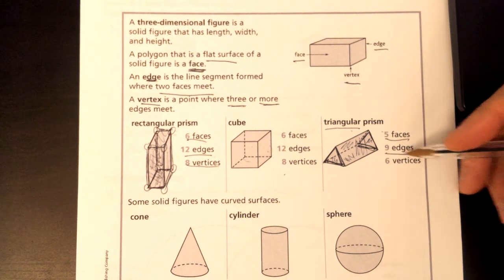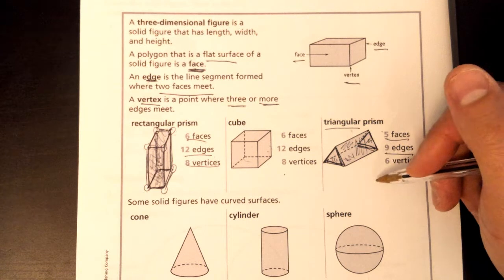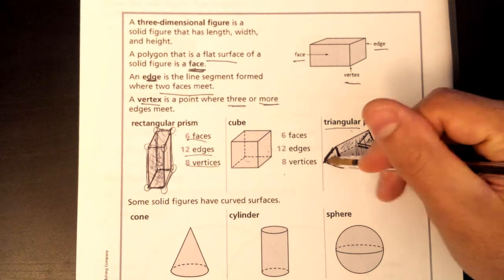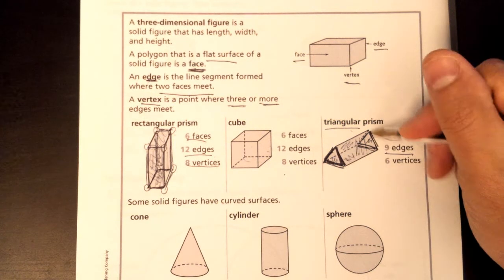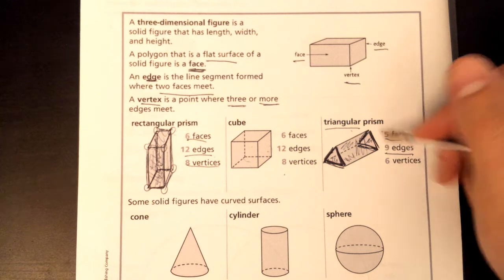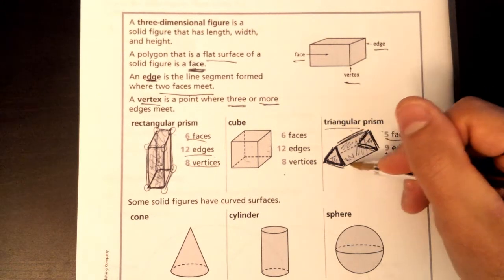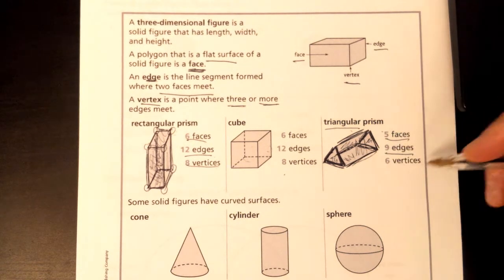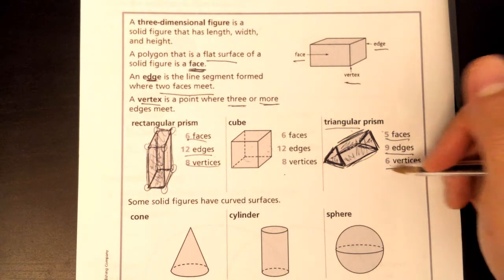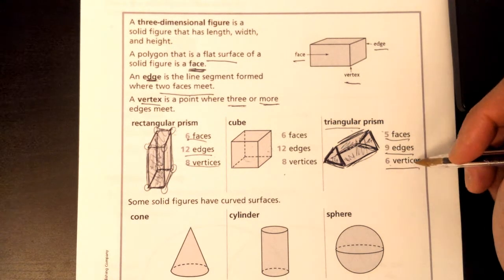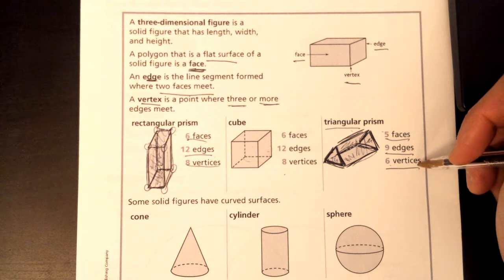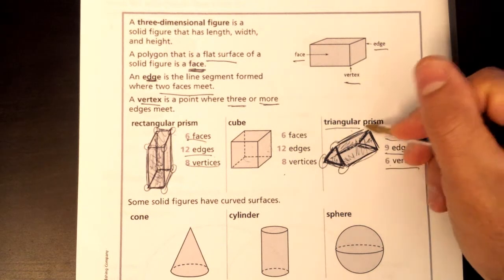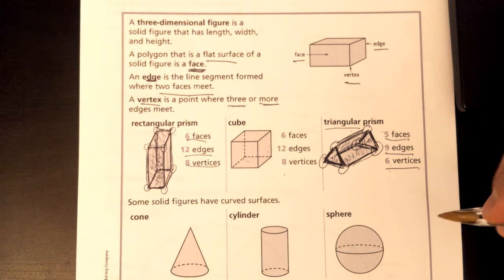How many edges does a triangular prism have? Remember, edges are where two faces meet: one, two, three edges there; four, five, six edges there; and don't forget the other edges — seven, eight, nine edges in all. And then finally the vertices — vertices is a fancy word for corners. If it's just one, you say vertex, not vertice. Counting: one, two, three, four, five, six vertices.